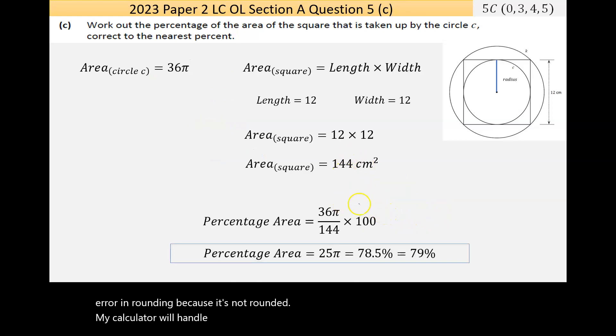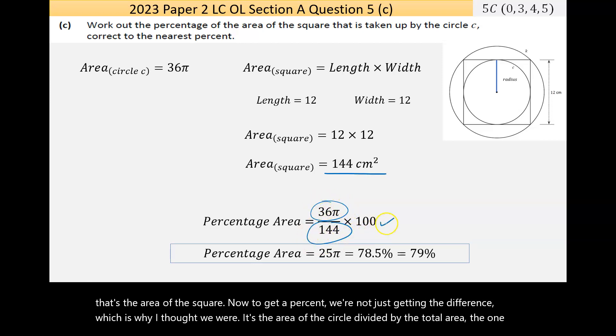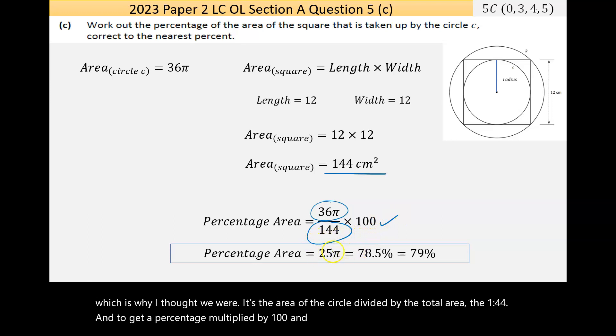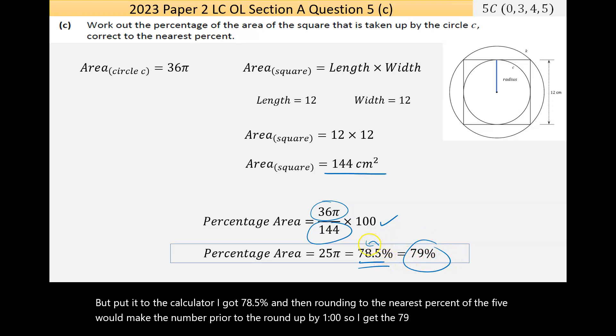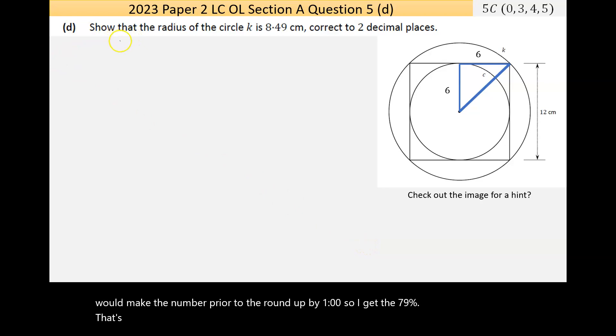My calculator will handle that so I should end up with—where am I? Oh work out the percent of the area of the square, okay my bad, should read the question. So that's the area of the square. Now to get a percent we're not just getting the difference, which is what I thought we were. It's the area of the circle divided by the total area, the 144, and to get a percentage you multiply by 100 and that comes out to be—now it came out with 25π but that's just a number, it's roughly 25 by 3—but put it through the calculator I got 78.5 percent, and then rounding to the nearest percent the five will make the number prior to round up by one so I get the 79. So that's cool.